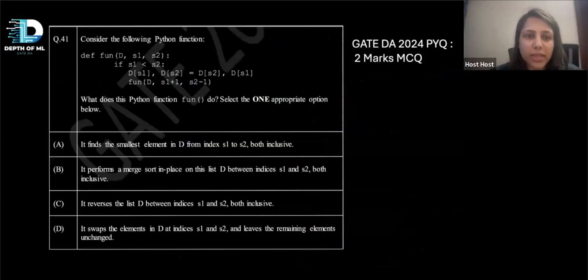So let's see the question. Let's look at what is this second question. So this is the second question, question number 41 from Gate DA 2024. It was also a 2 mark MCQ and let's see what this is asking.